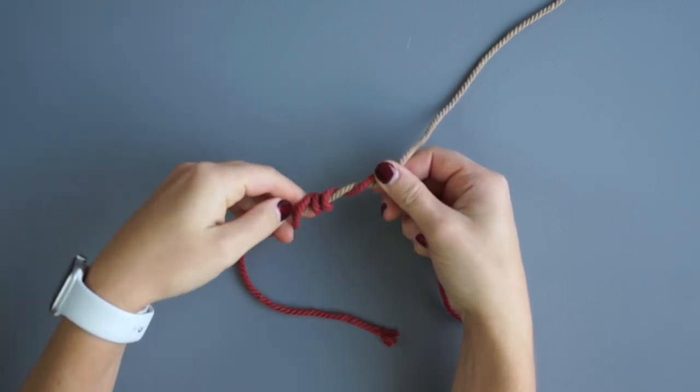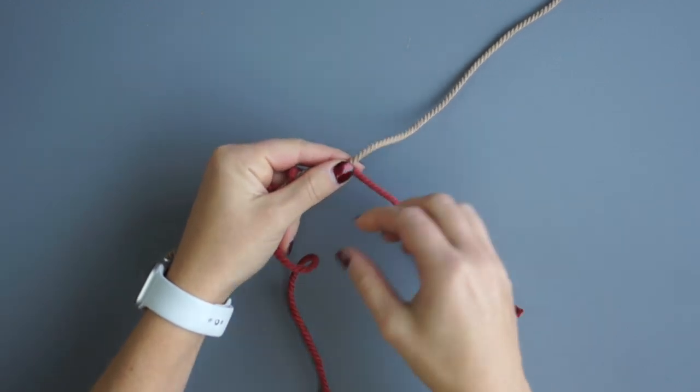After the 4th wrap, bring the end of the rope up and in between the two colors on the other side of your work.